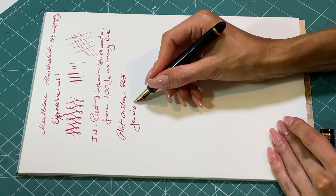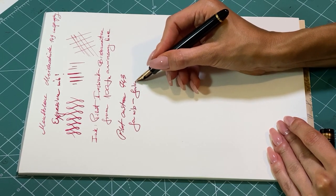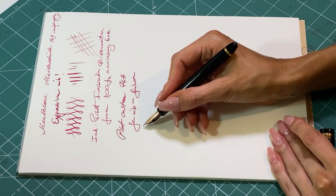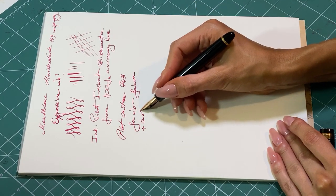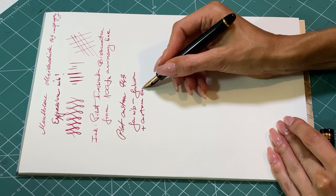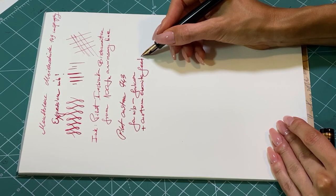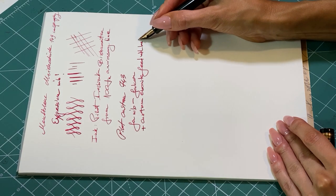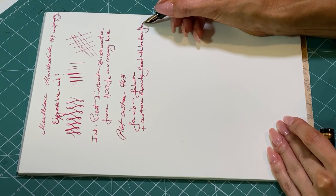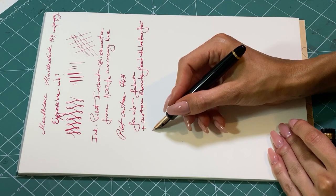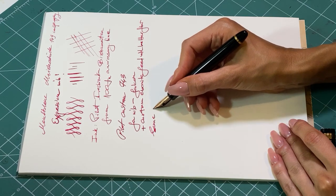The nib here is slightly modified. It's matched with a custom Ebonite feed as original feed which was ABS or plastic was a little bit too dry. And it skipped if pressed too much and with faster writing.